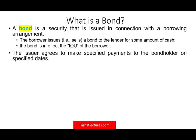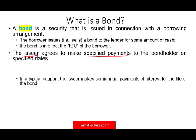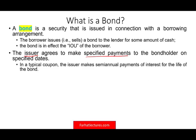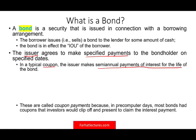The issuer, which is the company, agrees to make specific payments to the bondholder on specified dates. In a typical coupon bond, the issuer makes a semi-annual payment of interest for the life of the bond. We call those payments coupons. And typically, the interest is made semi-annually — so every six months they will make an interest payment, called a coupon payment.